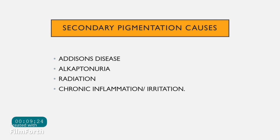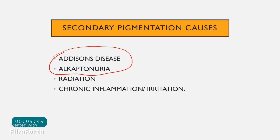Secondary pigmentation is seen in Addison's disease, and in alkaptonuria, where homogentisic acid is deposited in the eye and various other organs. It can also occur secondary to radiation, chronic inflammation, or irritation of the eyeball. The two most important systemic conditions to remember are Addison's disease and alkaptonuria.